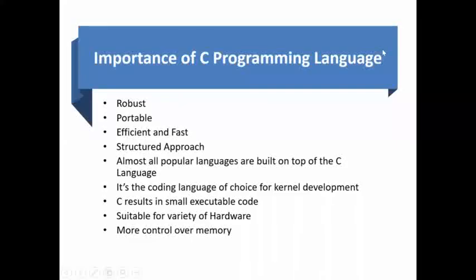The importance of C programming: C is a robust language because it has a rich set of built-in functions and operators that can be used to write any complex program. C is portable because it allows software developers to develop software without worrying about hardware platforms. C language is also efficient and fast.